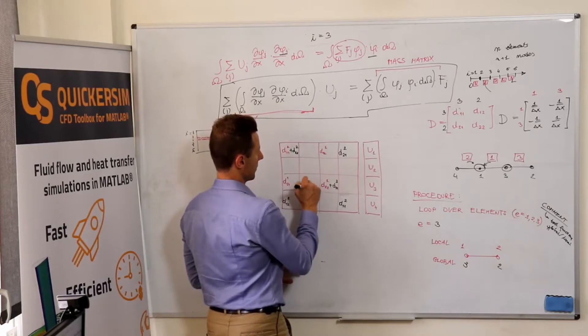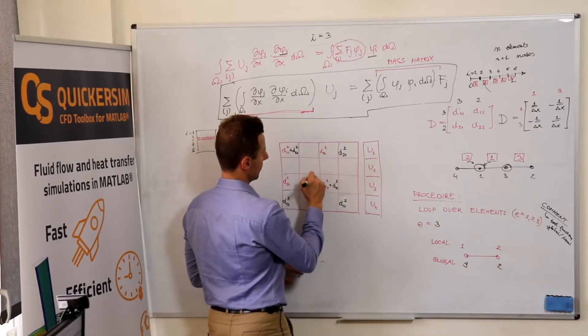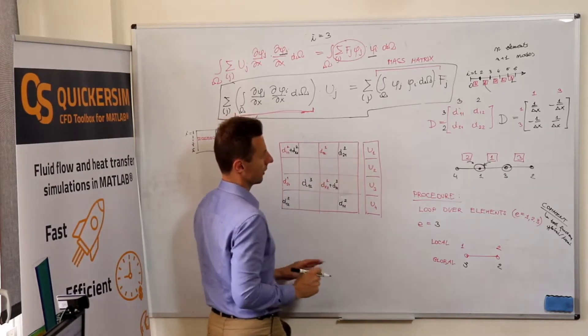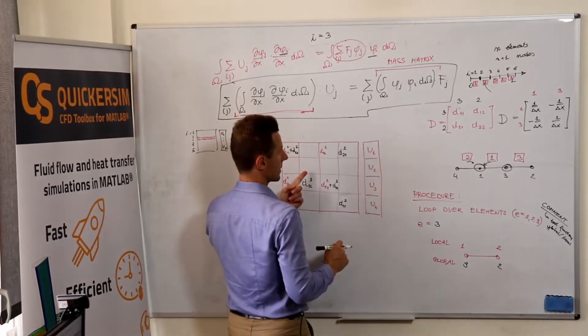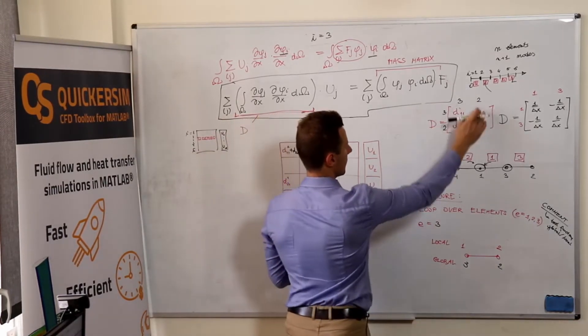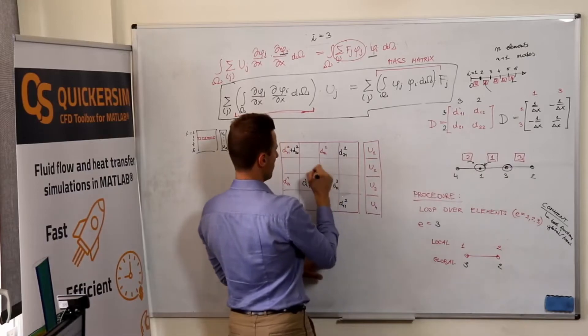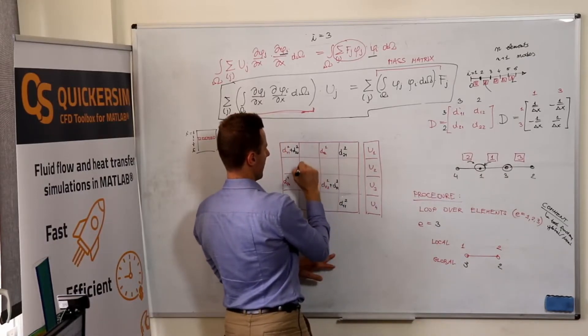D one-two of the third one. Sorry, D two-two should be here. D two-two.